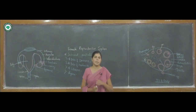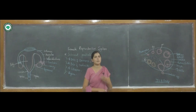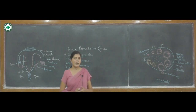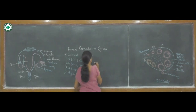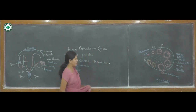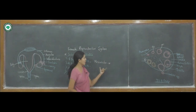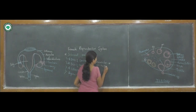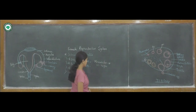At the onset of puberty, the development of primordial follicle into the Graafian follicle — the mature follicle — takes place. The first menstrual cycle begins at puberty age, and this is known as menarche. The starting of the menstrual cycle begins at the age of 12 to 14 years in the female. This period is known as menarche. The end of the menstrual cycle is known as menopause.